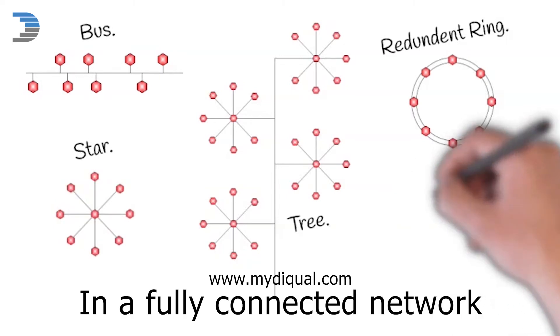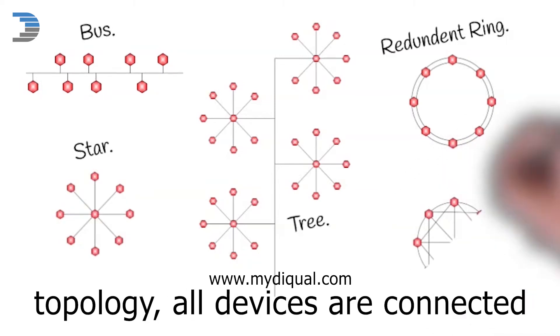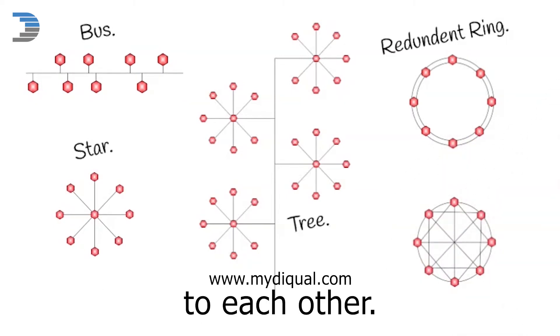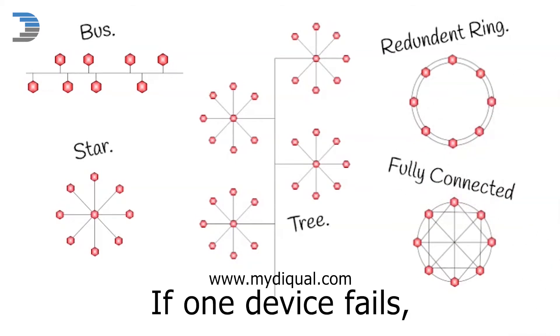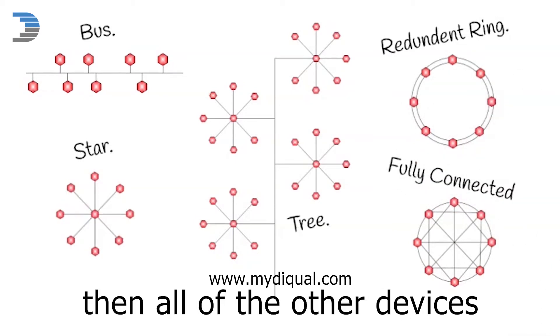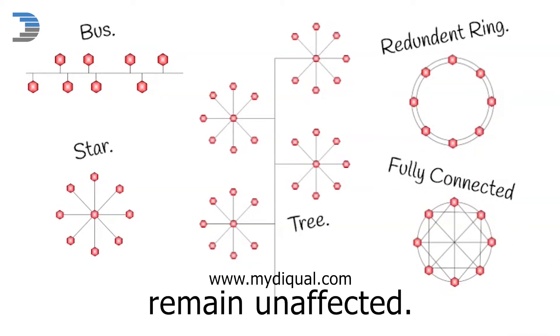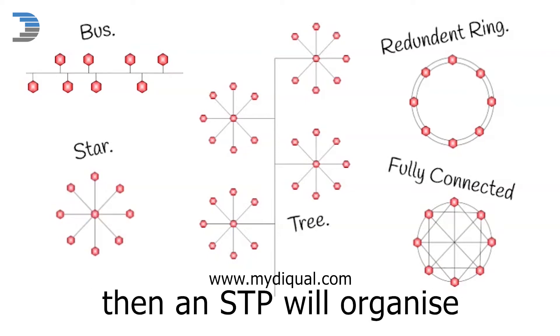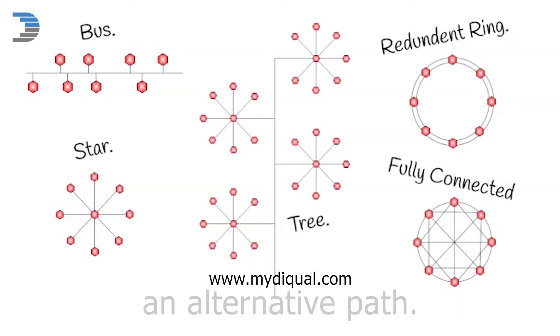In a fully connected network topology, all devices are connected to each other. If one device fails, then all of the other devices remain unaffected. If a communications link fails, then an SDP will organize an alternative path.